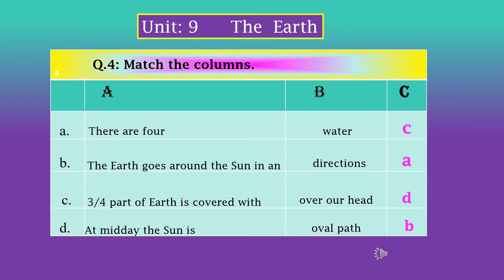First, the sentence I am going to read is 'a: There are four.' So you have to check all the words in column B. There are four water? No. There are four directions? Yes! So you have to match 'there are four directions.' You can draw a line or you can write the alphabet or letter. With 'there are four' is 'a', so with directions, or in front of directions, you have to write 'a'.